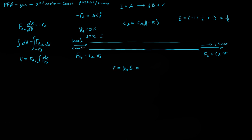With 50% inerts, we have 2 moles going in and 2.5 moles going out total. At 100% conversion, we get 1.5 moles of B and C plus 1 mole of inerts, giving 2.5 total moles. So delta for our system is effectively 0.5 net moles gained per mole of A fed.